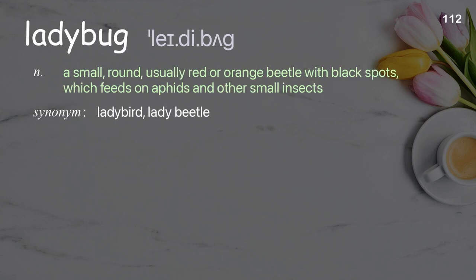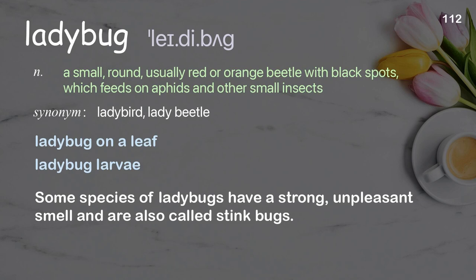Ladybug: a small, round, usually red or orange beetle with black spots, which feeds on aphids and other small insects. Examples: ladybug on a leaf, ladybug larvae. Some species of ladybugs have a strong, unpleasant smell and are also called stink bugs.